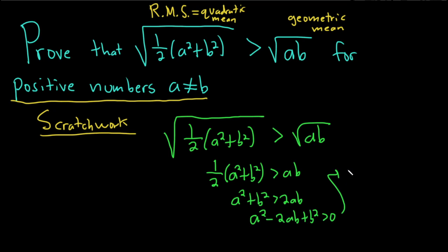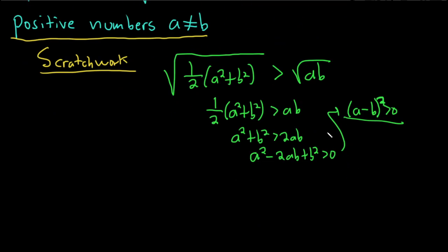And that's the same thing as A minus B quantity squared. And that's always true as long as A and B are different, which they are. So we can start our proof with this, and then just basically work backwards. So let me show you.